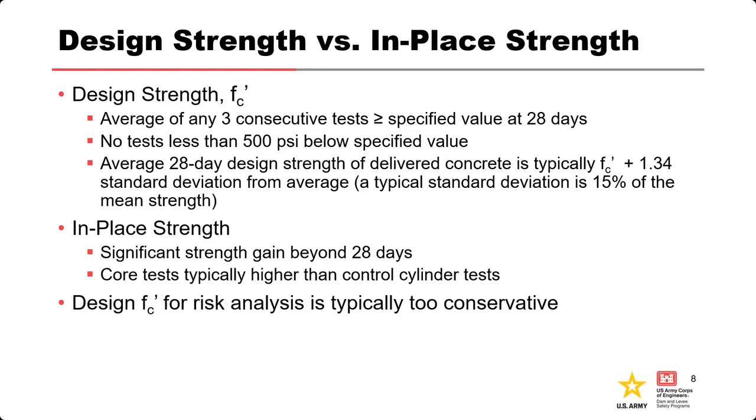So right away, our strength of concrete is targeted to be higher than that Fc prime value listed in all of our design documents. And then on top of that, it's pegged at 28 days, but concrete continues to gain strength through its whole life, so we get significant strength above that 28-day value. Cores of an existing structure are typically higher than cast cylinders — all of our quality control is based on cast cylinders, and this has to do with the curing environments those are in. So that again makes our in-situ concrete higher than our tested values. The end result is that Fc prime as listed on design documents is too conservative to use for risk assessments, so we'll walk through correcting that.